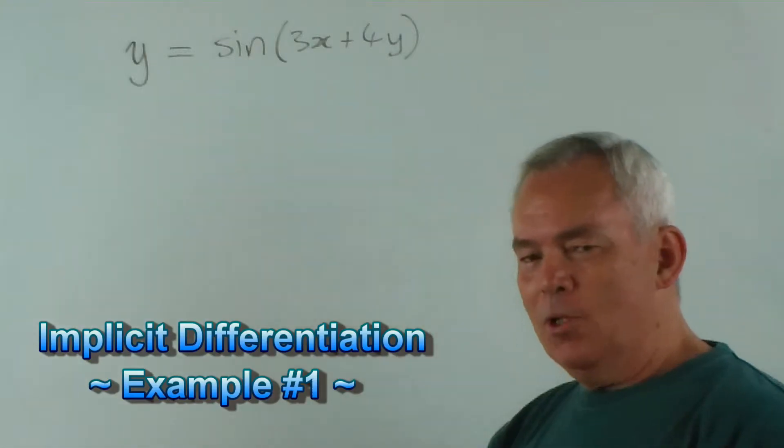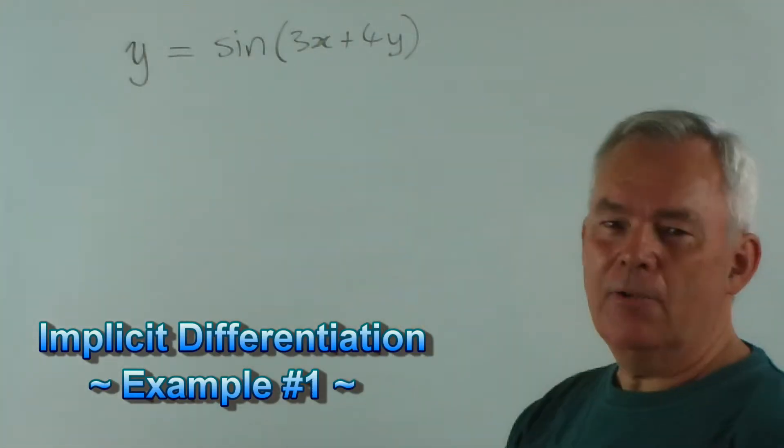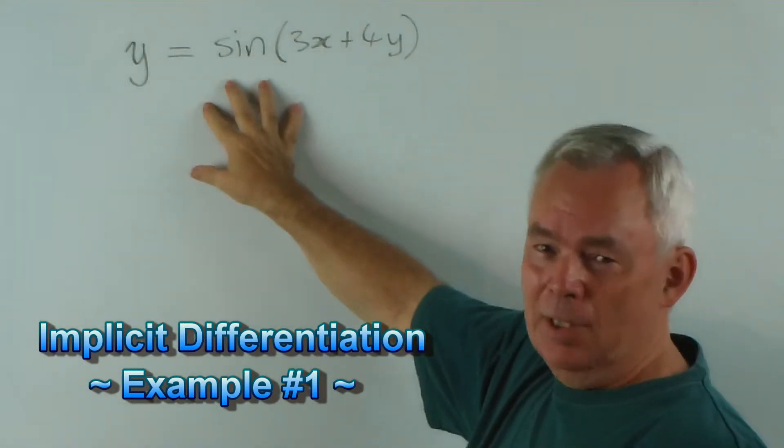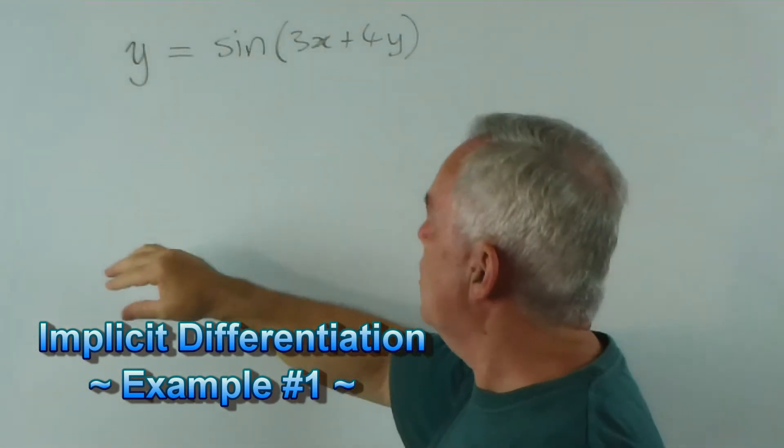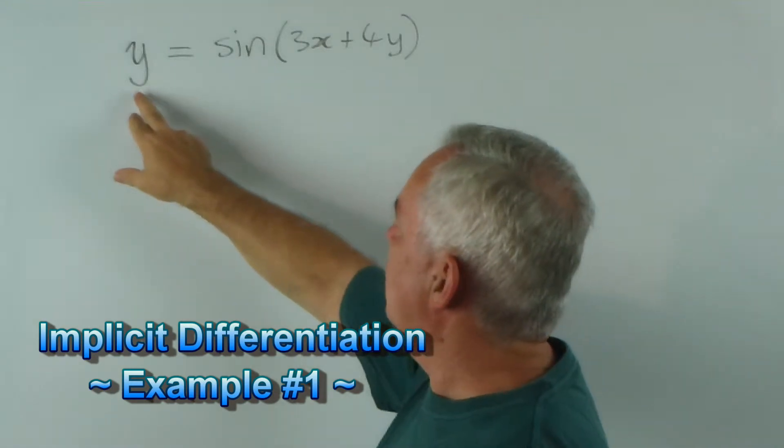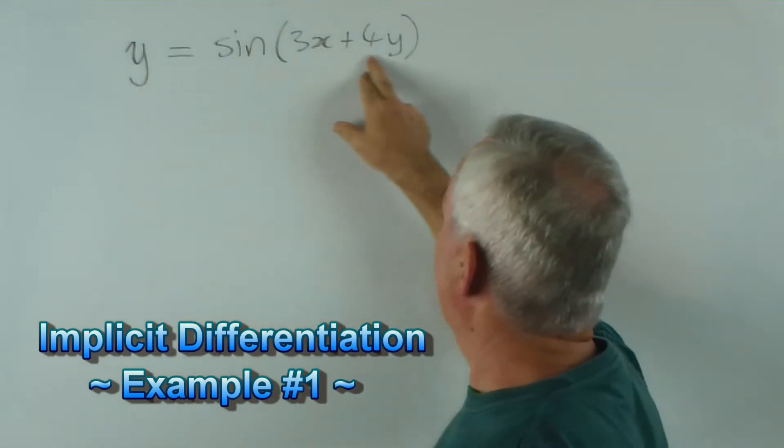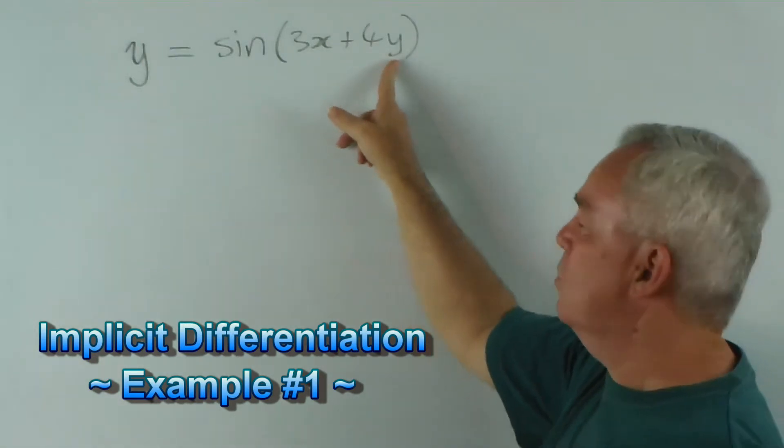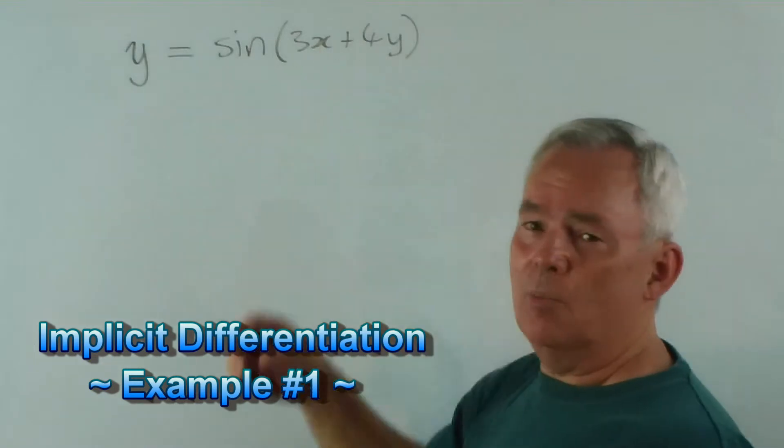G'day and welcome. In this video we're going to find the derivative of this relation implicitly. You can see here it's not an explicit function because y does not equal a function purely based on x. It's got a y value inside this expression as well. This makes it rather more complicated.